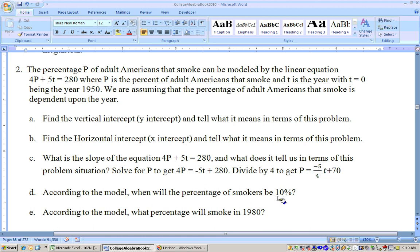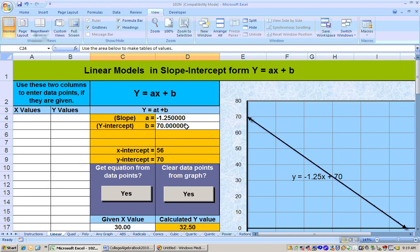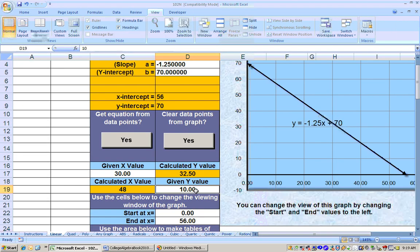This problem says, when will the percentage of people smoking be 10%? Well, we actually plug this in as a whole number in for p, and if we plug in 10 in for p and solve it, you'll get your value for t. What I did is I substituted the negative 5 fourths and the 70 into the linear sheet for my a and my b, and then I just substituted the 10 in for y, which is playing the role of the percentage, and I get 48.